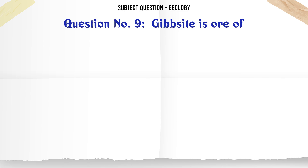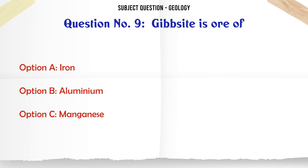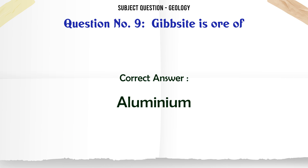Gibbsite is ore of: A. Iron. B. Aluminium. C. Manganese. D. Lead. The correct answer is Aluminium.